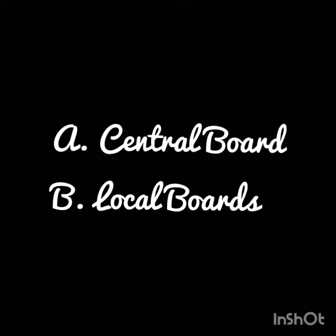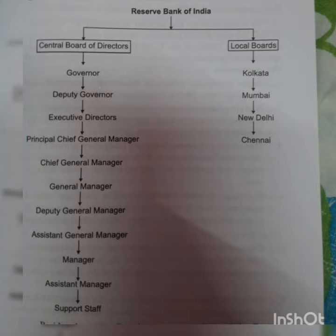The central board of directors is the main supreme body which mainly governs the central bank. It basically consists of 20 members, which includes a governor, four directors, ten directors to be nominated by the central government, and one government official who may be the Secretary of the Ministry of Finance, nominated by the central government.